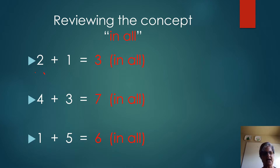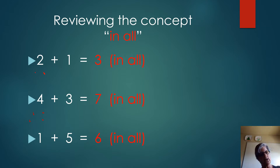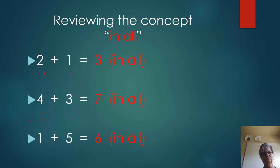Now I go to the next problem, and I have four plus three equals seven in all. So underneath the four, I am going to put four dots again. I'm going to put three dots underneath the number three. Now let's go back to the bottom one — we have one plus five equals six in all.